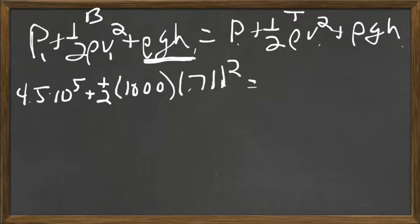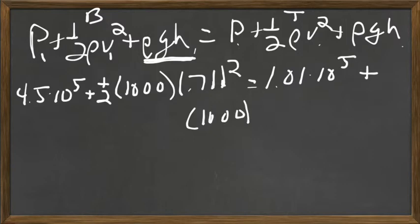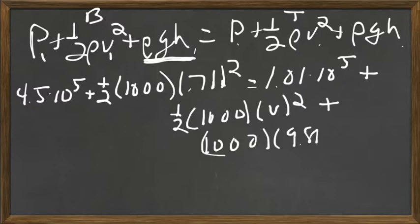Equals, it's a faucet open to the environment, so the pressure, 1.01 × 10⁵, plus it's still water, and ½, I'm solving for speed. It is moving, so it will have kinetic energy, and 1,000, gravity, and height of 30 meters.